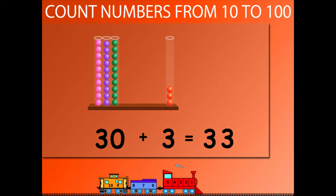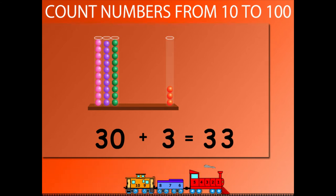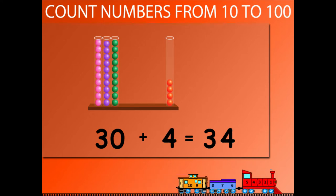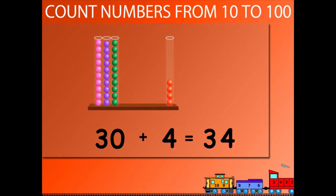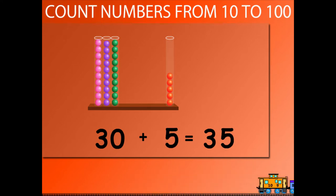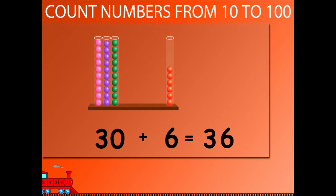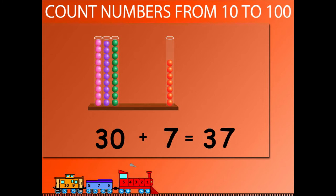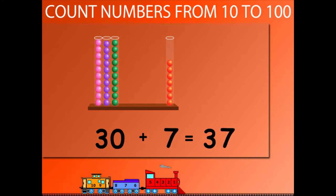30 plus 3 is equal to 33. 30 plus 4 is equal to 34. 30 plus 5 is equal to 35. 30 plus 6 is equal to 36. 30 plus 7 is equal to 37.